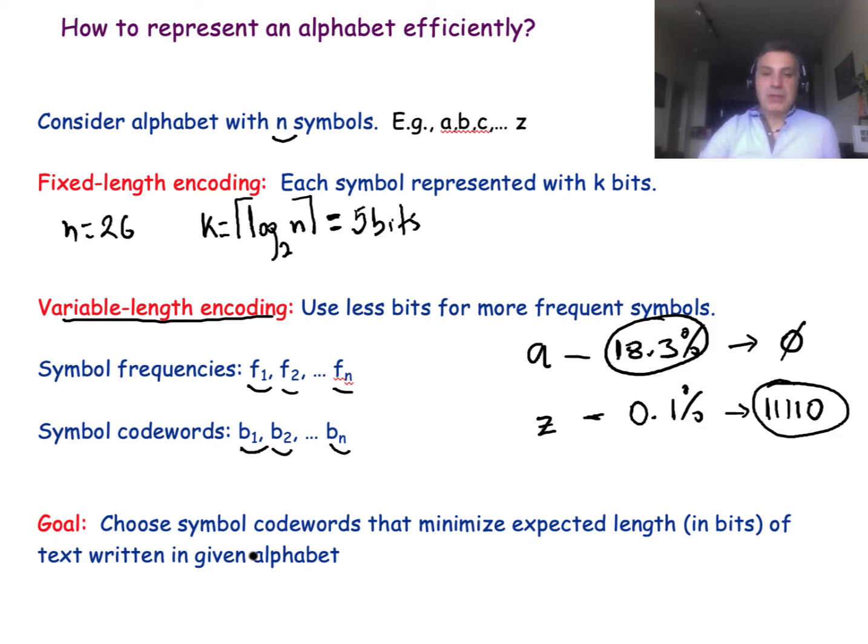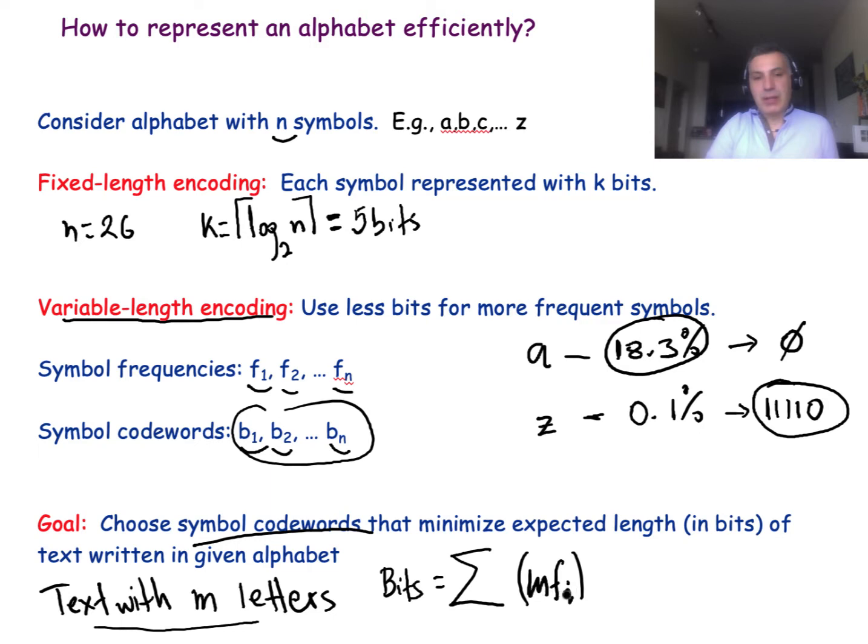If we think in terms of transmitting, for instance, texts over the internet, you would like to transmit as few bits as possible. Or if you are thinking about storing them in your computer, you would like to store as few bits as possible. So we're trying to choose here these codewords, we're trying to choose the set of Bs that minimize the expected length of a text written in the given alphabet.